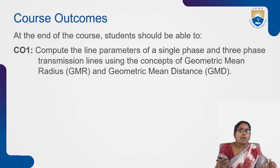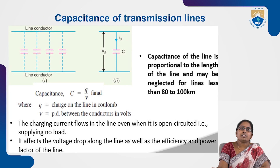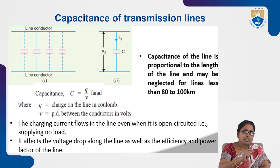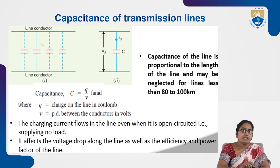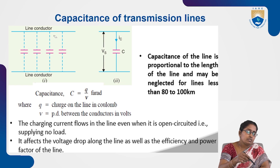This topic maps to course outcome 1, CO1. Basically, how does capacitance come into picture in the transmission line? If we take a transmission line, as you can see in the diagram on the left side, a single-phase line has two conductors — one conductor is a line conductor and the other one is the ground neutral. Between the two conductors, the capacitance comes into picture like this.